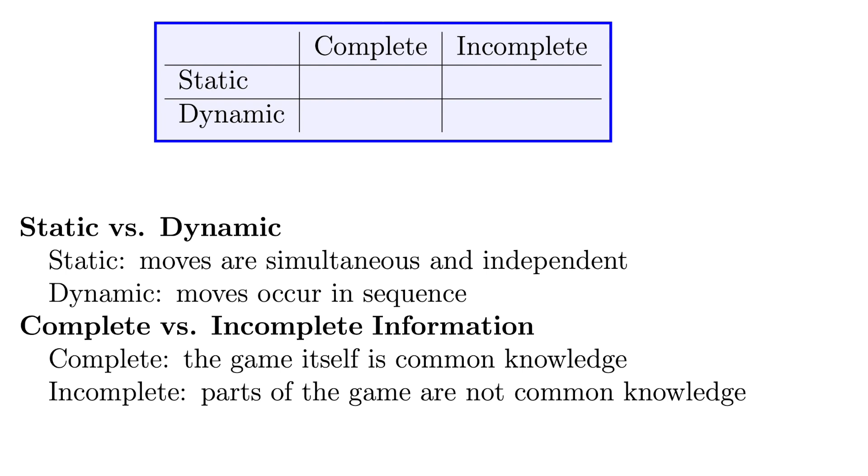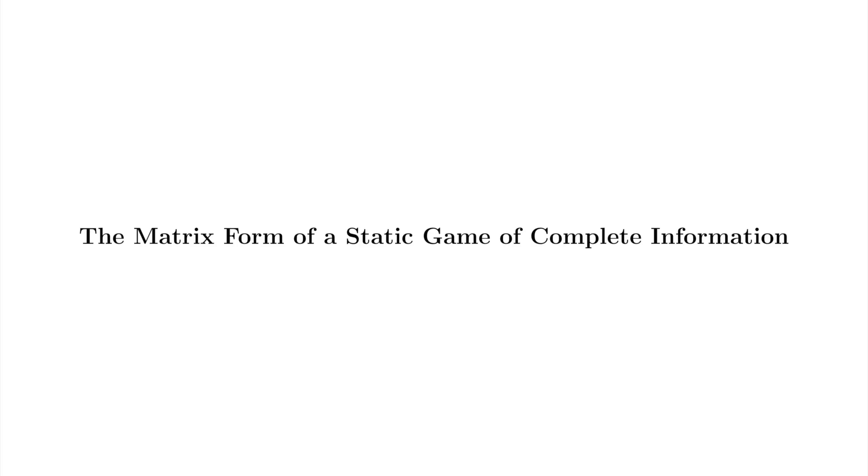Poker, on the other hand, is a game of incomplete information, since one does not know all of the other player's cards. Now that we've discussed static games of complete information enough to give at least one example of such a game, Rock Paper Scissors, we'll spend the rest of this video exploring the two forms game theorists use to express static games of complete information.